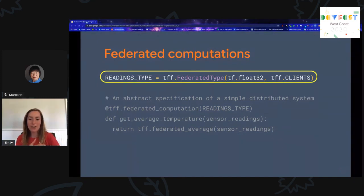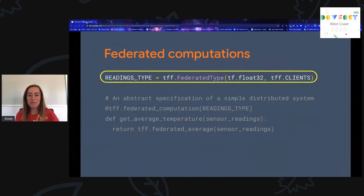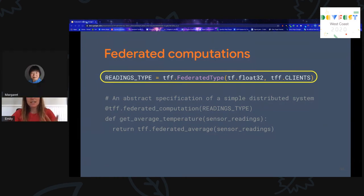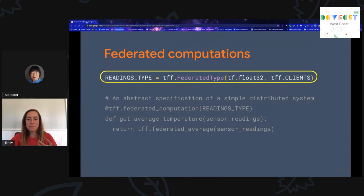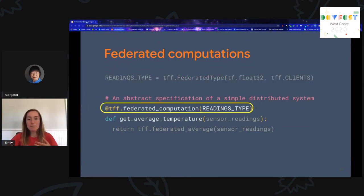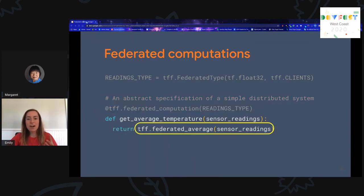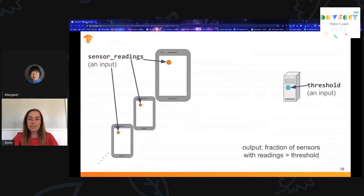I'm going to run through a brief code example using TFF. I won't go too in depth, but at the end I'll put up a link to tutorials where you can walk through the code yourself. Here we'll be declaring a federated type that represents the input, then passing it as an argument to the special function decorator that declares this a federated computation. We'll be invoking our federated operators — here we have that federated average intrinsic. Now let's do a more interesting example: computing what fraction of sensors have a reading over a certain threshold. We have a threshold input at the server that will be broadcast to each of the clients.